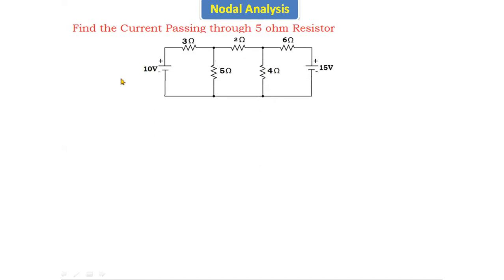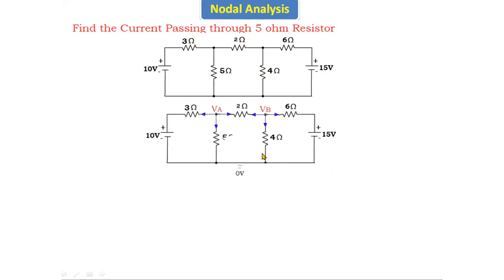In the given problem, find the current passing through the 5 ohm resistor. Here in this circuit there are two unknown node voltages. In the previous class we saw only one node voltage, but here there are two unknown voltages. I am assuming two unknown node voltages: node VA and node VB, both unknown.